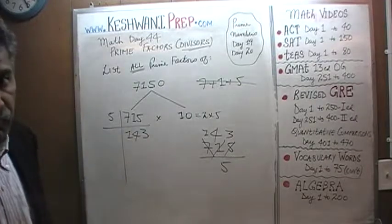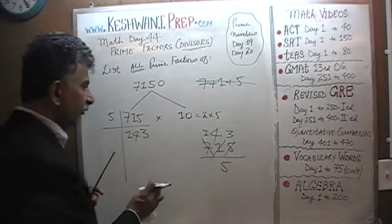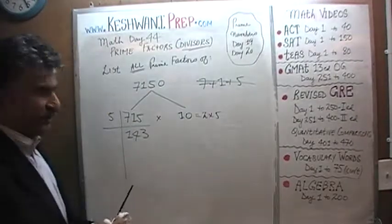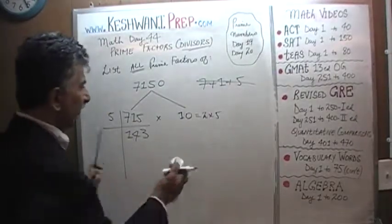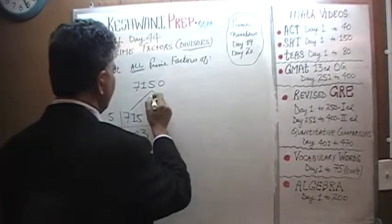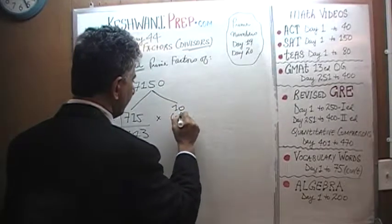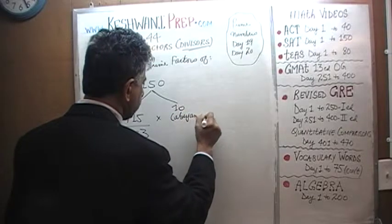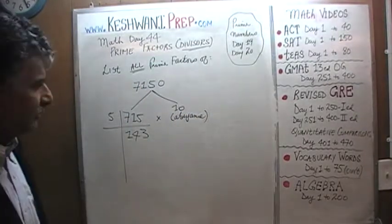Now this is where things are going to get tricky — pay attention. I am going to set the 10 aside for the time being because we need the room. 10 is very simple; we know what the factors of 10 are. Let's keep the 10 in abeyance and just worry about 143.